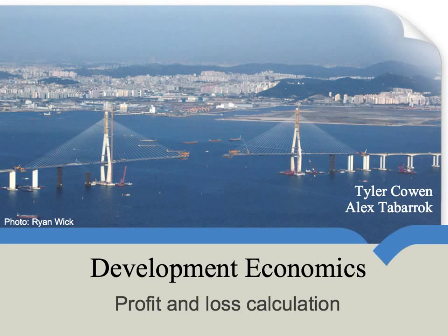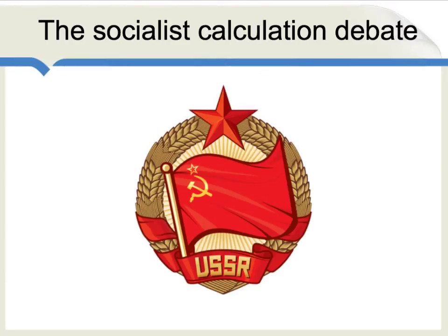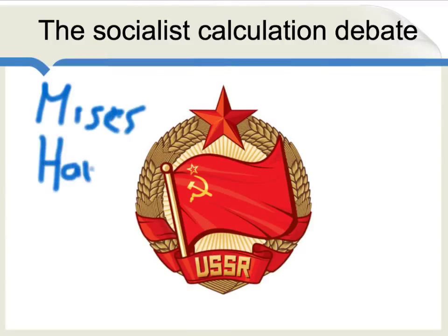We're now going to look at the issue of profit and loss calculation. The point of this unit is to help explain why government planning doesn't always succeed. The core ideas here were first presented during the socialist calculation debate, which took place in the first part of the 20th century. After the communists took over the Soviet Union, there was a claim that central planning would be more efficient than capitalism. But two economists from Austria — Ludwig Mises and Friedrich von Hayek, who later won a Nobel Prize — argued that central planning would not be nearly as efficient as capitalism with its system of market prices and profit and loss.